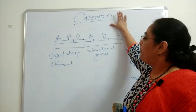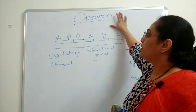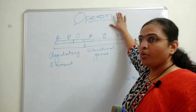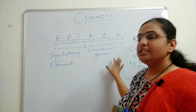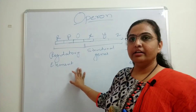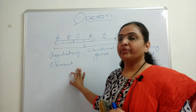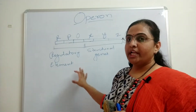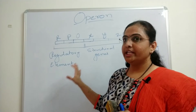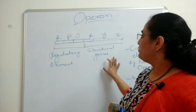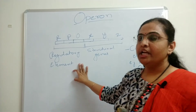The operon model — the structure of the operon — consists of structural genes and regulatory elements.